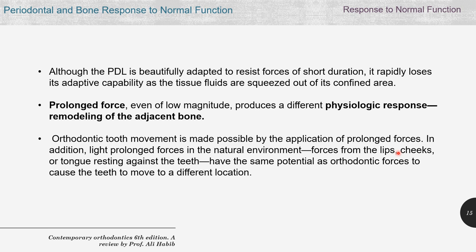Orthodontic tooth movement is made possible by the application of prolonged forces — this is what Angle discovered. In addition, we have natural forces from the surrounding environment — forces coming from the lips, cheeks, or tongue. If we have abnormal force from these soft tissues surrounding the teeth, it might cause movement. An example is open bite caused by tongue thrusting, where the tongue applies continuous pressure on the teeth.